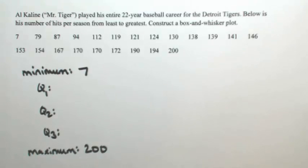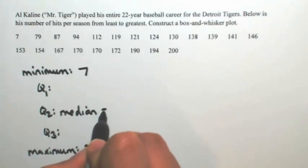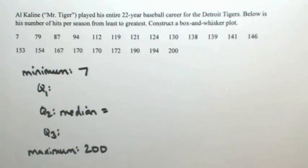The next thing we'll find is the second quartile, because the second quartile separates the bottom half from the top half. This is the same thing as the median. Because we have 22 numbers (22-year career), it's an even number, so we're going to average out the middle two numbers.